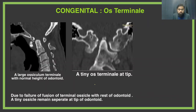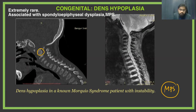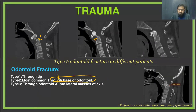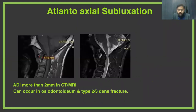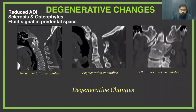This is os terminale, which is due to failure of fusion between the terminal ossicle and the rest of the odontoid. This is a congenital case of mucopolysaccharidosis, where the dens is severely hypoplastic; note also the wedging of the vertebrae. This is a trauma patient with injury to the dens — type 2 dens fracture at the base of the odontoid was the most common in our study. Coming to atlanto-axial subluxation, an ADI interval greater than 2 mm on CT is an indicator of atlanto-dental subluxation. This shows degenerative changes with a reduced atlanto-dental interval, sclerosis, and osteophytes.